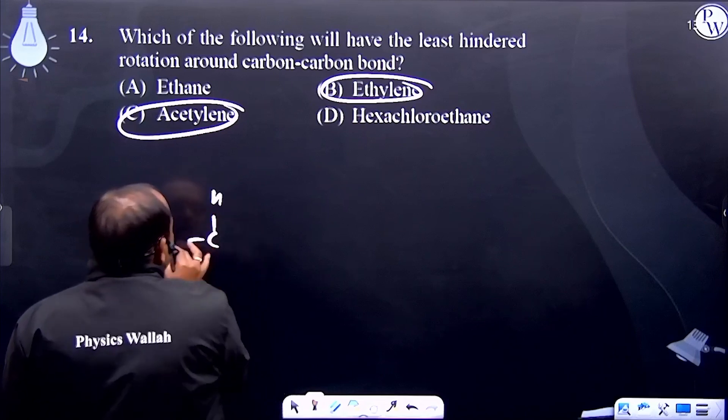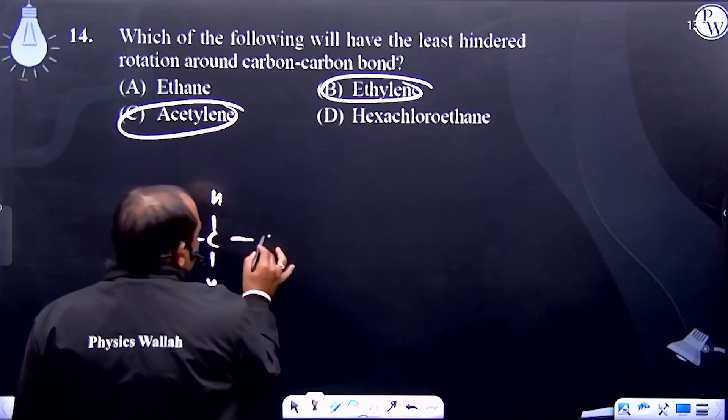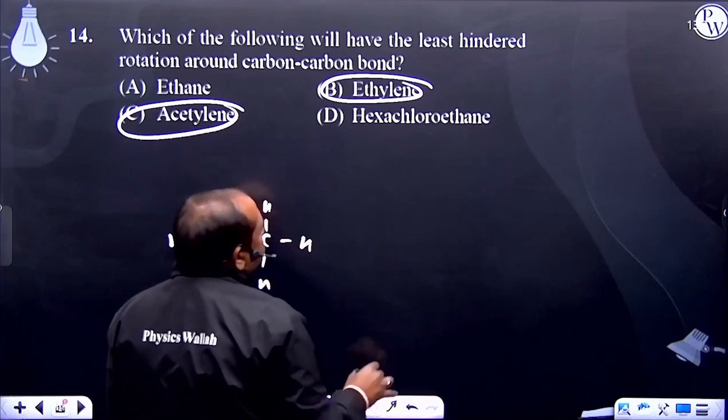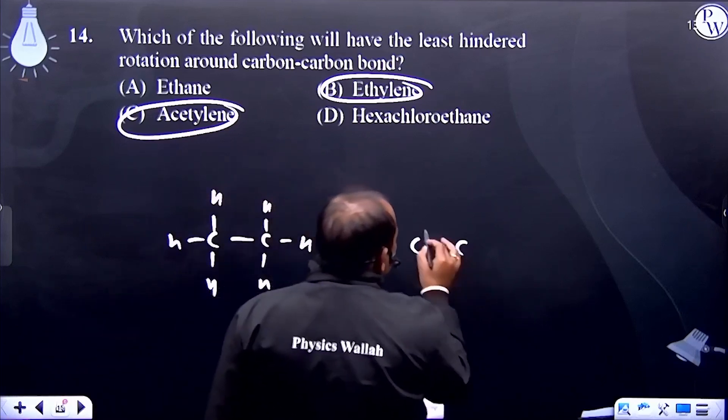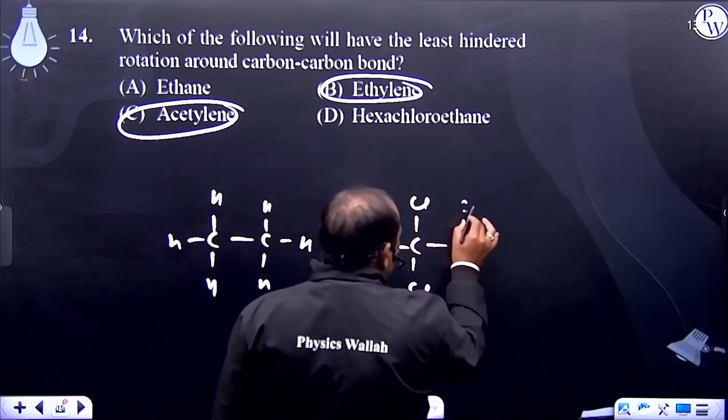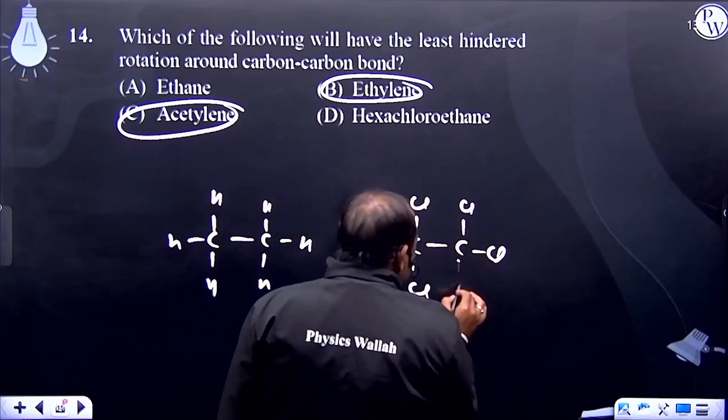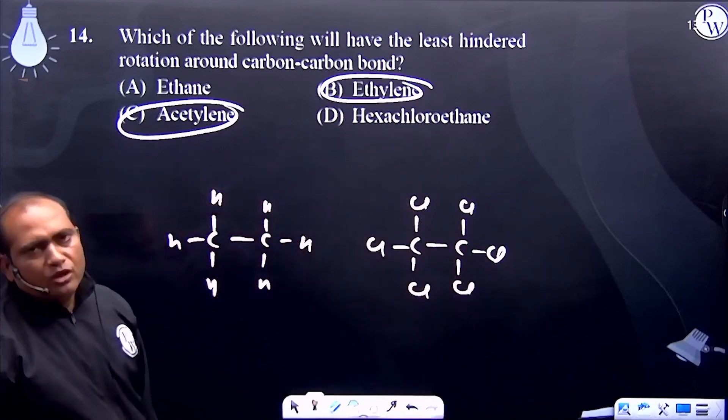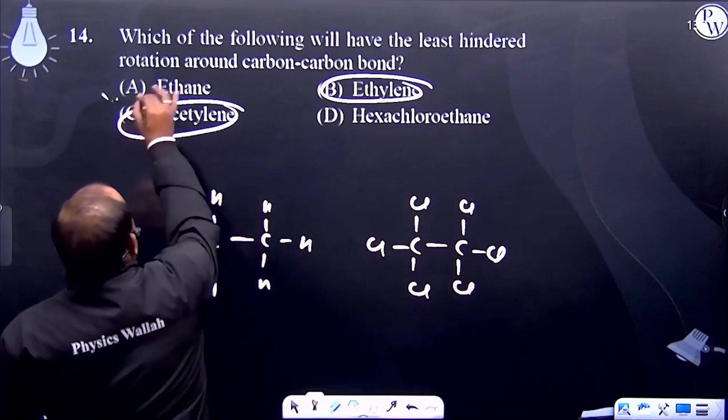First and fourth, there is free rotation. But due to six chlorides, higher size groups, there is slightly more hindered rotation with respect to first. So your answer is A.